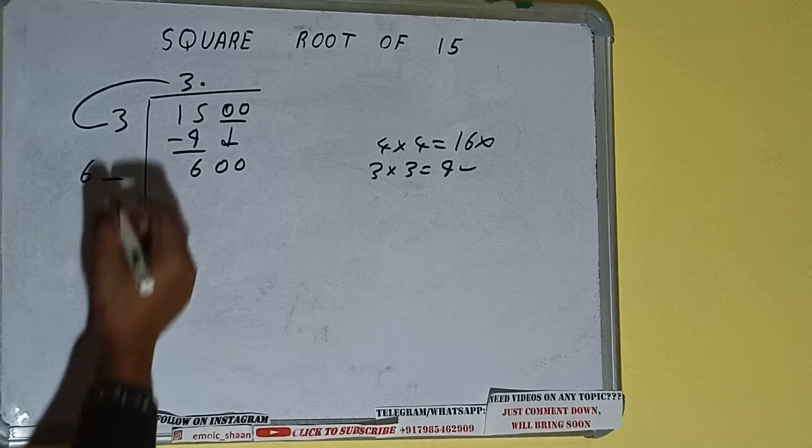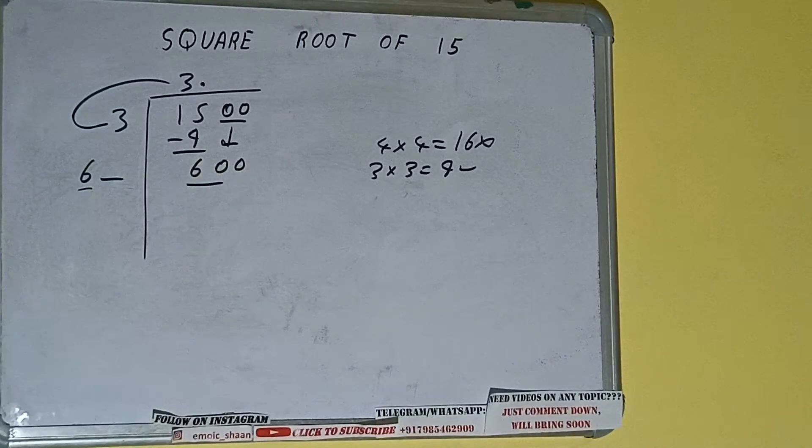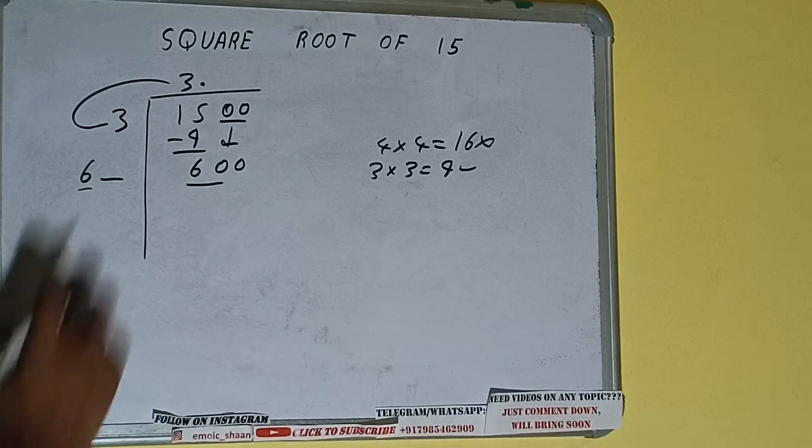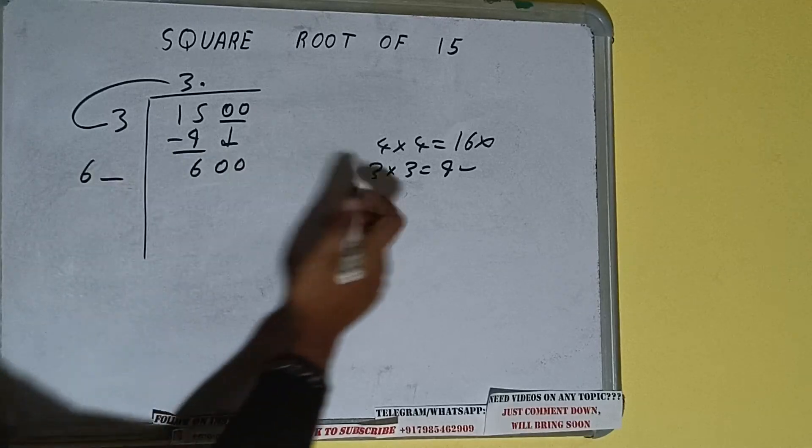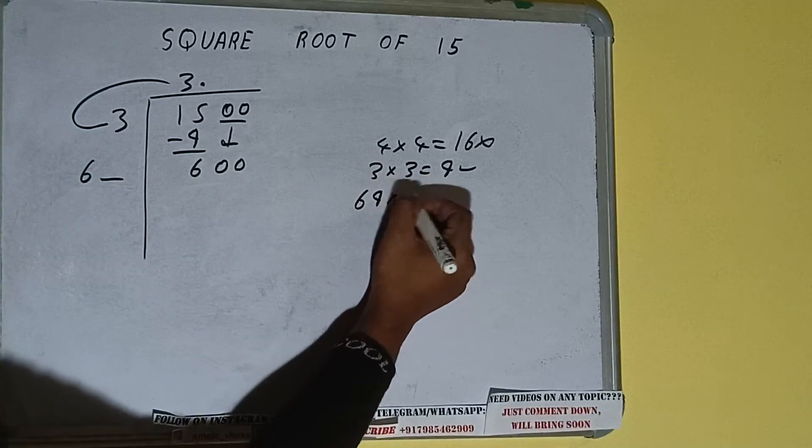Now whatever number we write here, we have to write here also. So we can compare the 6 and 60. So 9 is the highest unit digit, right? So we can use 9 here. Let's try 9 times 69 into 9.